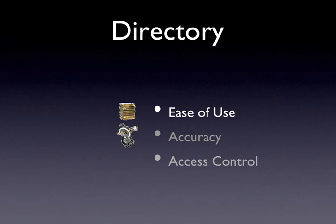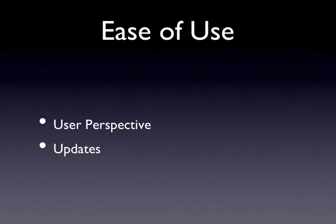Let's now look at how we've measured up against these requirements and examine ease of use. When we consider ease of use, there are two major aspects. One is the user perspective — can you use it to find information? But there's another aspect, coming back to the maintenance of the directory: how easy is it to perform updates and to keep it up to date? Let's examine how we've measured up in terms of performance from the user perspective of ease of use.